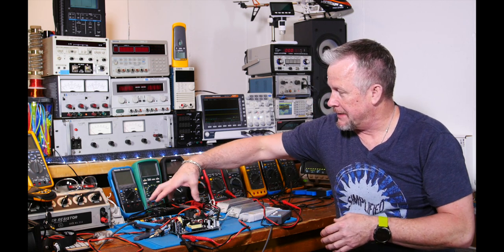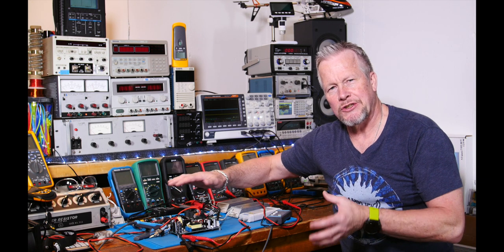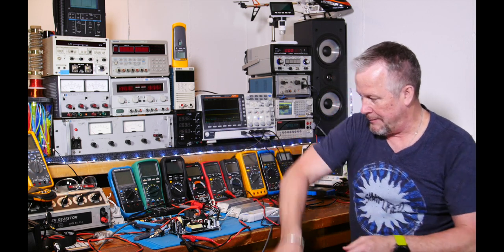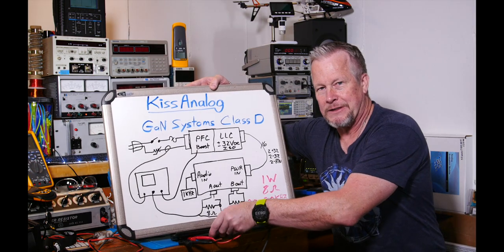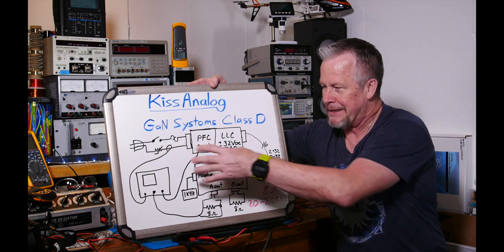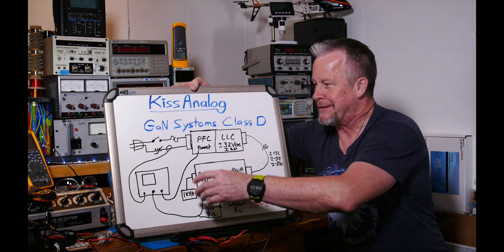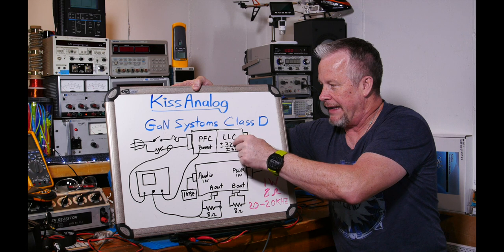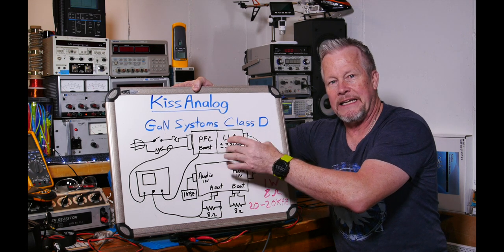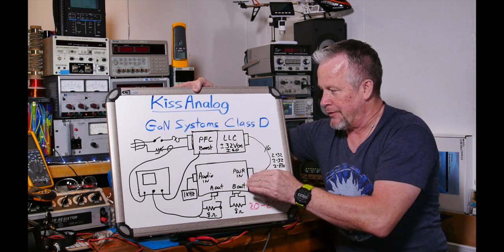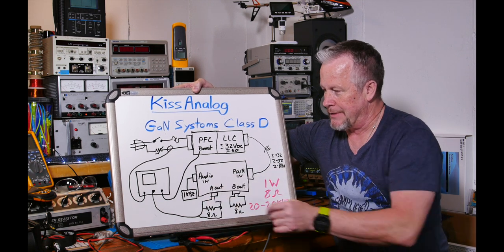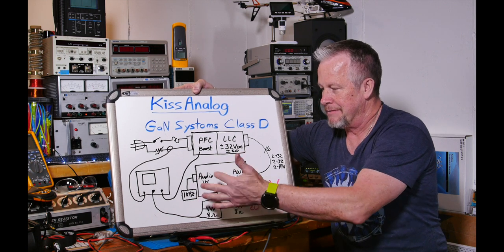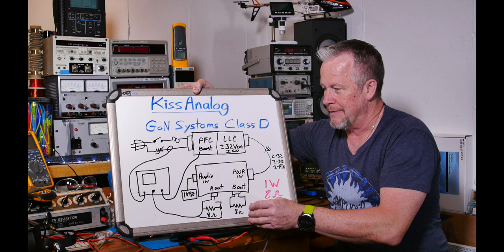In the first video, we looked at some signals and the gain-phase relationship over frequency. Today I want to start looking at the power supply. AC power comes in, the power supply has two sections: the PFC boost and the LLC isolated output — plus and minus 32 volts — coming over to the Class D amp. We have two 8-ohm speakers, and I'm going to use a 1 kHz generator to put a signal into the amplifier so I can power up both sides.